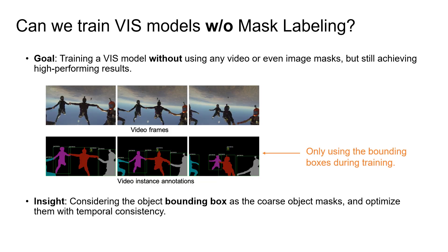As a source for weakly supervised learning, videos contain much richer information about the scene. In particular, videos adhere to the temporal mask consistency constraint, where regions corresponding to the same underlying object across different frames should have the same mask label. In this work, we set out to leverage this important constraint for mask-free learning of VIS. We propose Mask-Free VIS, achieving highly competitive VIS performance while only using bounding box annotations for the object state.